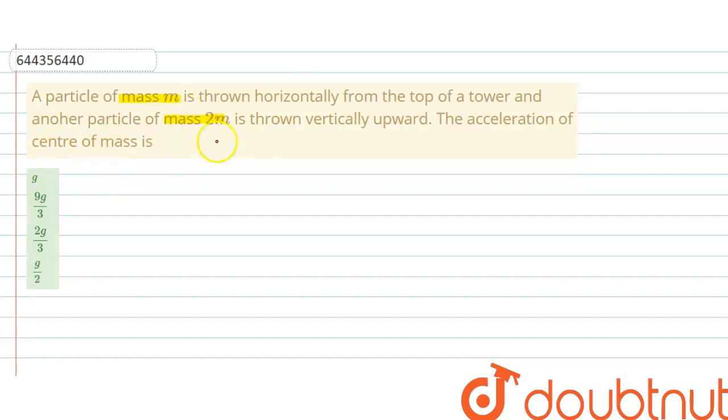Both particles are thrown, one horizontally and another vertically upward, but in both cases acceleration of both the particles will be small g due to gravity because there is only one force acting on both particles, which is the gravitational force. So acceleration of particle 1 is also g and acceleration of particle 2 is also g due to gravitational force, and there is no another force acting on the particles.